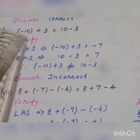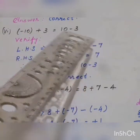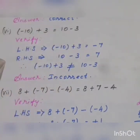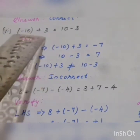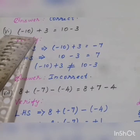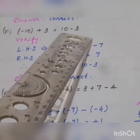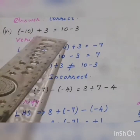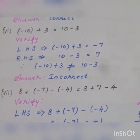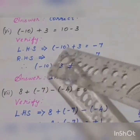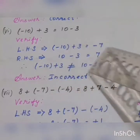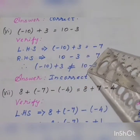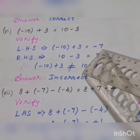This is the sixth statement: minus 10 plus 3 equal to 10 minus 3. These two are said to be equal. If it is equal, the statement is correct; if not equal, it is incorrect. Left hand side is minus 10 plus 3. One positive, one negative number — difference the numbers. 10 is the biggest number and its sign is minus. So our left hand side answer is minus 7.